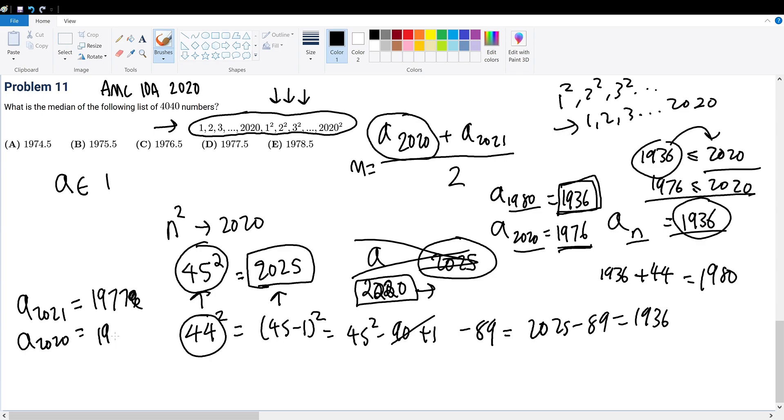So a's of 2020 is equal to 1976 plus 1977 divided by 2 would be the answer. So 1977 plus 1976 will be equal to, let's see, 3953. And that divided by 2 will give us 1 to give us 19. And then we put a 9 here, which is 15. And then we put a 7, which is 13. And then we put a 6, which is 12. So 1976.5 will be our solution.